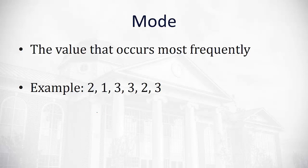So for example, if I've got the data set 2, 1, 3, 3, 2, 3, you see the number 3 appearing 3 times, and so 3 is considered to be our mode because it occurs most often.